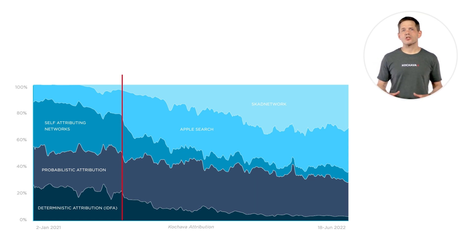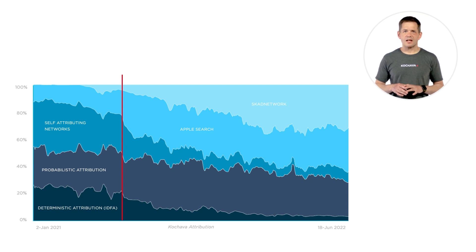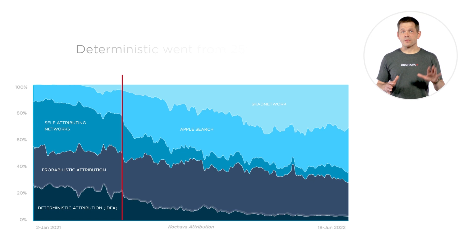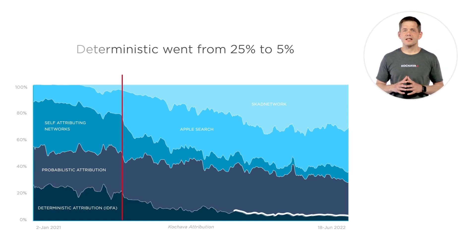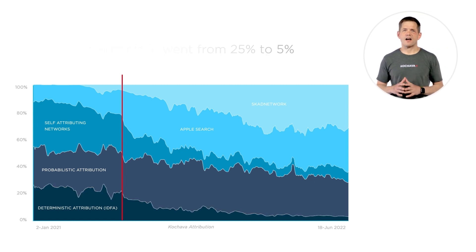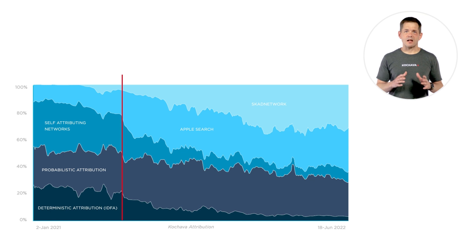Deterministic attribution took a hit, which we of course expected because the IDFA couldn't be used for device matches. Deterministic went from 25% of total attribution prior to ATT to just 5%.